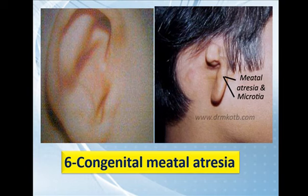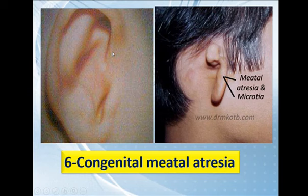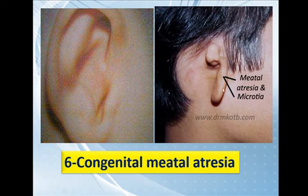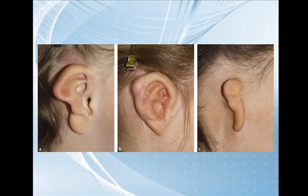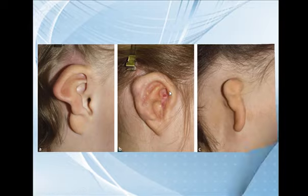We now reach the external auditory canal. The external canal can be congenitally stenosed or congenitally absent, as seen in this image — this boy has an auricle without an external auditory canal. This is called congenital meatal atresia. It can be associated with microtia or an abnormally small or deformed auricle — microtia and meatal atresia together.